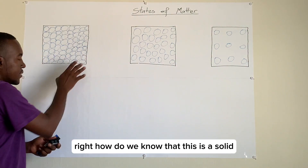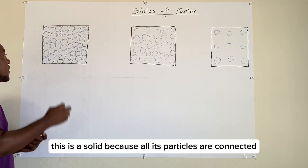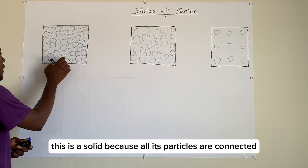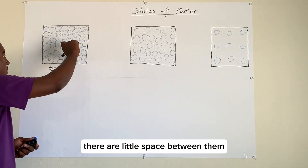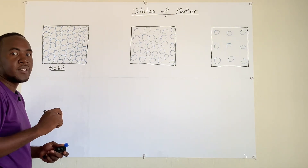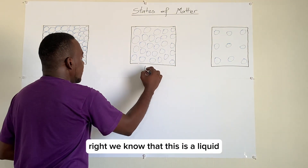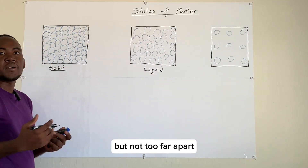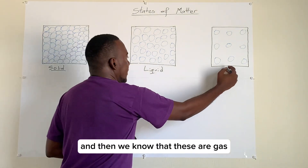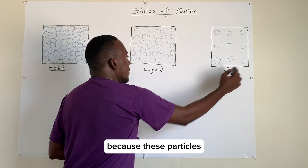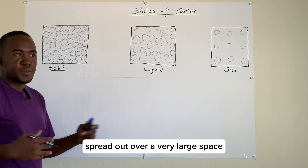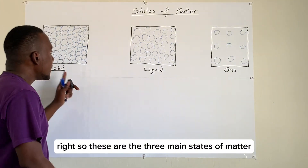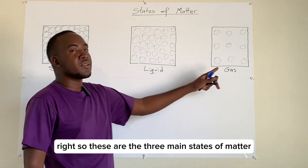How do we know that something is a solid? A solid is one where all its particles are connected — there is very little space between them. We know that something is a liquid because it has more space between particles but not too far apart. And gases have particles that spread out over a very large space. So these are the three main states of matter.